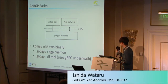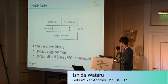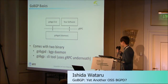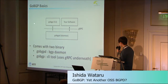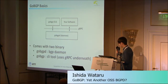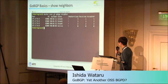Next, I'd like to share the basics of GoBGP. When you install GoBGP, it comes with two binaries. One is gobgpd, which is the BGP daemon running on your server. The other is gobgp, which is the CLI. It uses gRPC underneath, so you can use the CLI to configure the daemon, but you can also use your own software to configure or retrieve stats from the daemon.